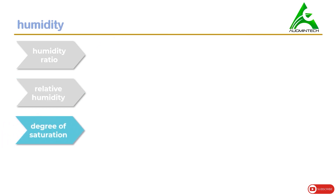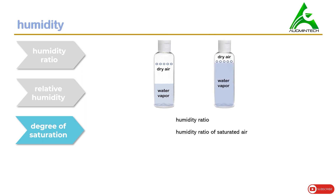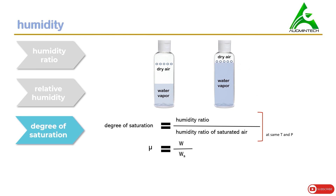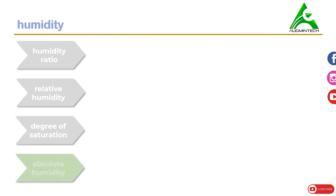Degree of saturation: to find it, find the humidity ratio of a sample of air, then find the humidity ratio of the same sample of air when it is saturated. The ratio of these two values gives the degree of saturation, and this must be at the same temperature and pressure. The holes on the two bottles are at the same height, so their maximum moisture holding capacity remains the same. Degree of saturation is written as μ = W / Ws, where Ws is the humidity ratio of saturated air.